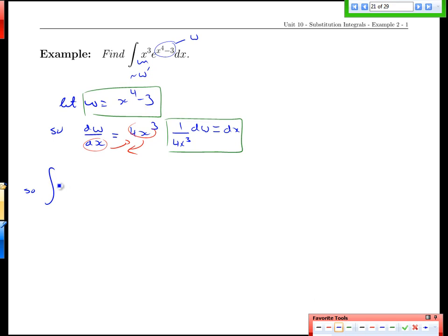With those substitutions in place, e to the x to the 4 minus 3, when we integrate this with respect to x, we're going to be able to replace, well the x cubed we can't replace yet, we'll keep it there. The e to the complicated part, the complicated part we're calling just w. And then last but not least, the dx, the dx is going to be replaced by 1 over 4x cubed dw.